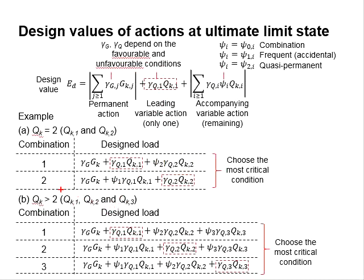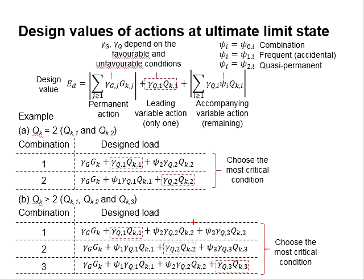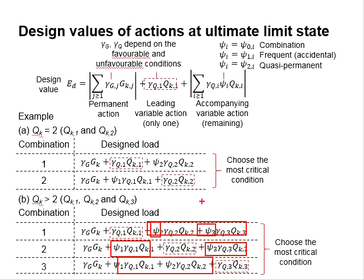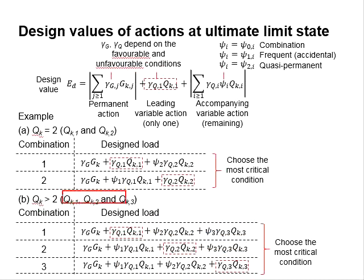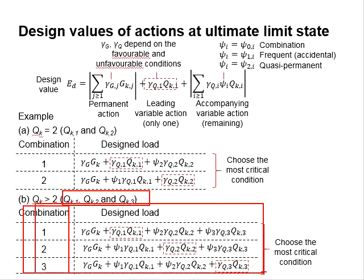In the case that you have more variable actions, you will have more combinations. The leading variable actions will change in between the variable actions, while the remaining are considered as the accompanying variable actions, which need to be multiplied with a factor of psi. More variable actions will have more combinations, and the similar calculation process will be followed.